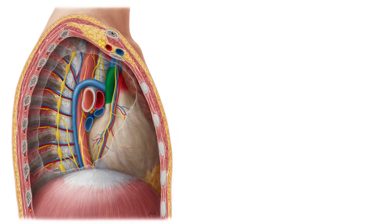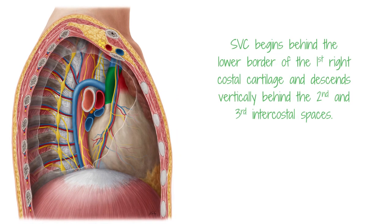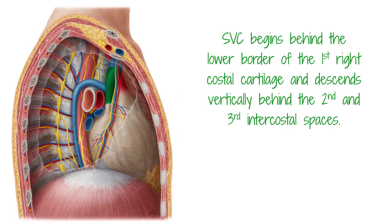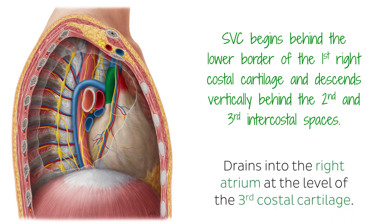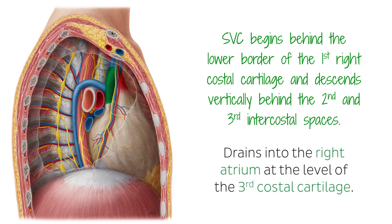Positionally, the SVC begins behind the lower border of the first right costal cartilage and descends vertically behind the second and third intercostal spaces to drain into the right atrium at the level of the third costal cartilage. Its lower half is covered by the fibrous pericardium, which is pierced by the SVC at the level of the second costal cartilage.